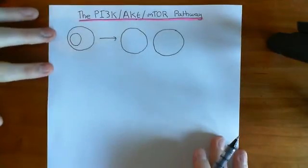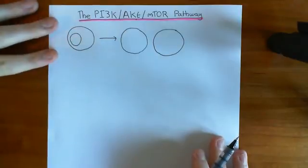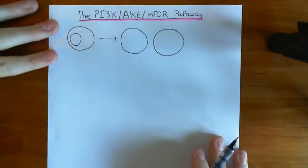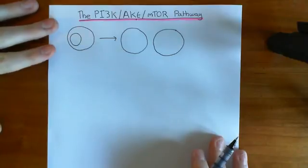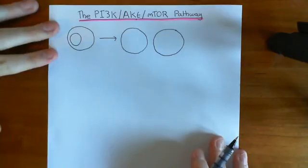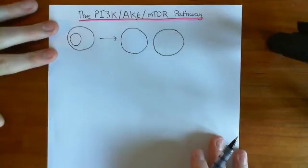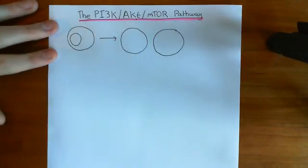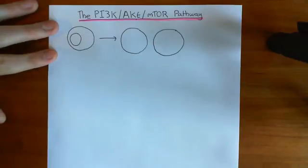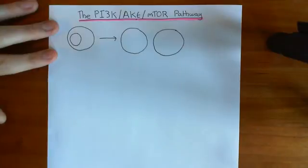The two main pathways activated by receptor tyrosine kinases to produce cell growth and then division kind of go hand in hand. One produces the epigenetic changes that cause change in transcription of the genes; the other is going to produce the translational changes that allow us to actually translate this increased amount of mRNA and turn it into an increase in the amount of protein. The PI3 kinase AKT mTOR pathway activates translation in two ways: firstly, it increases the number of ribosomes by activating the cell to produce more ribosomes. Additionally, it activates the translational machinery already present, speeding up the rate at which an individual ribosome translates.